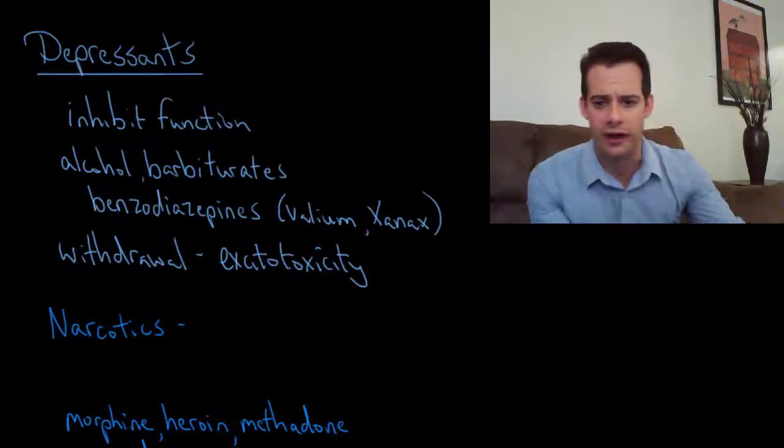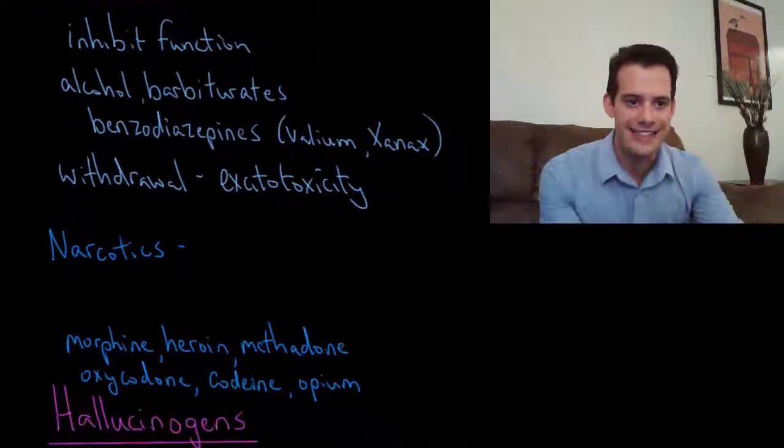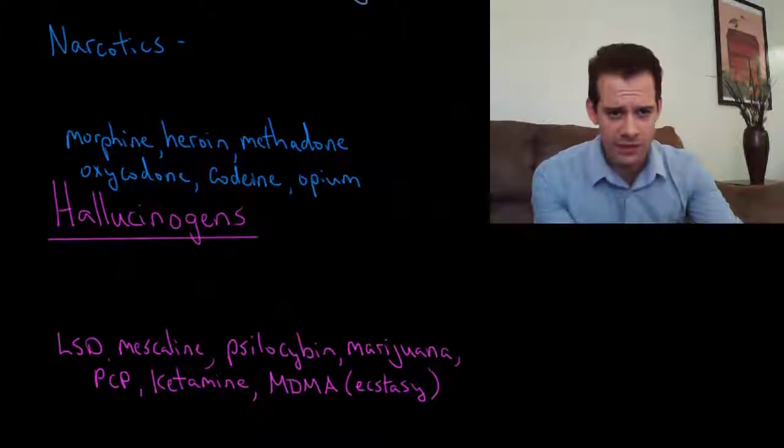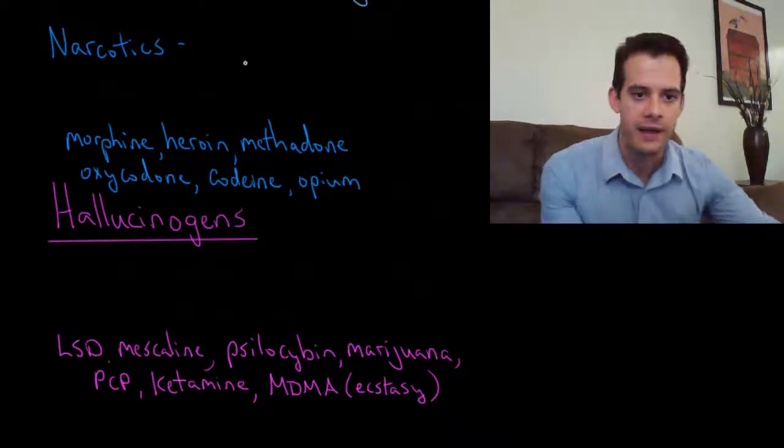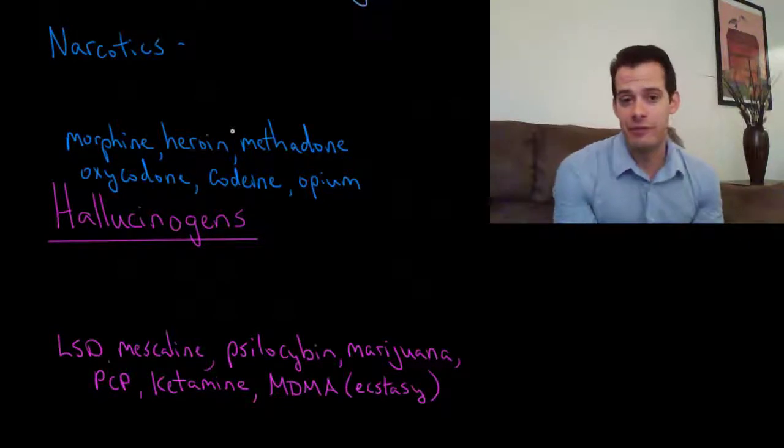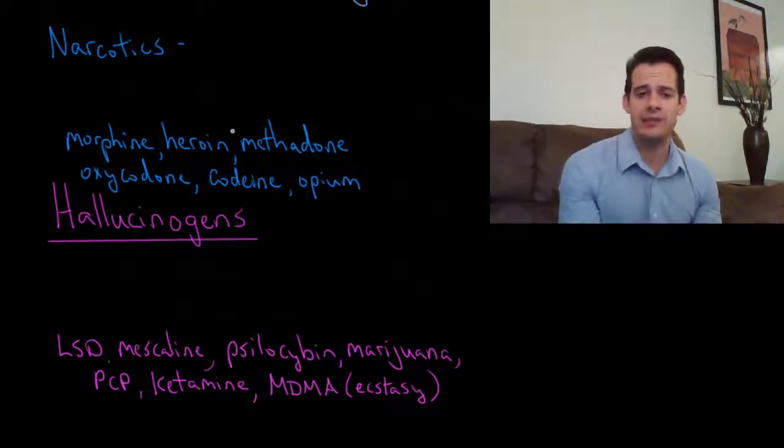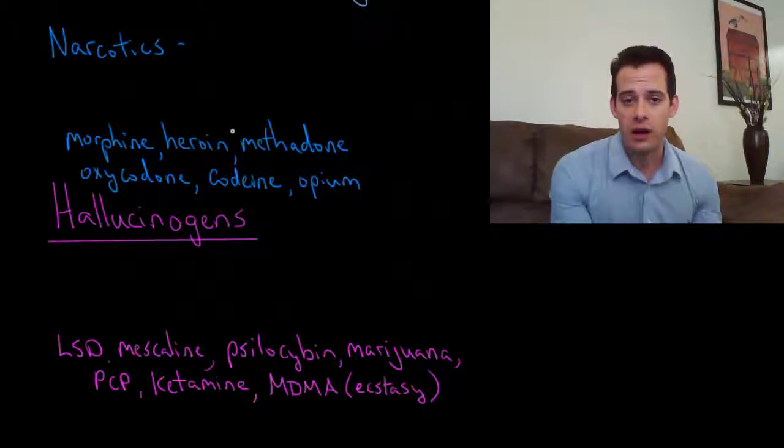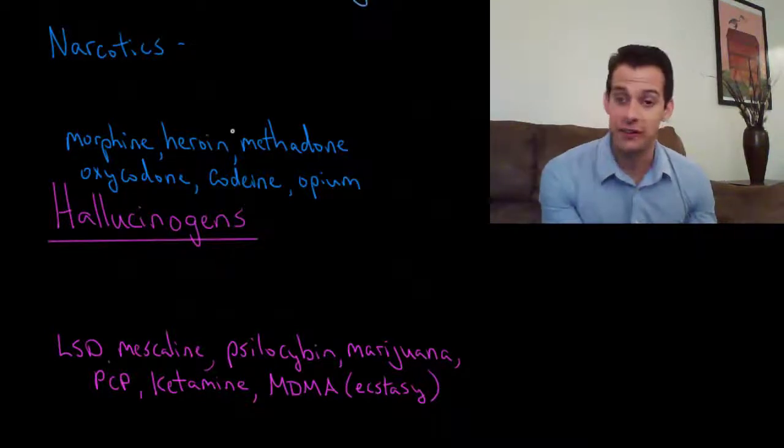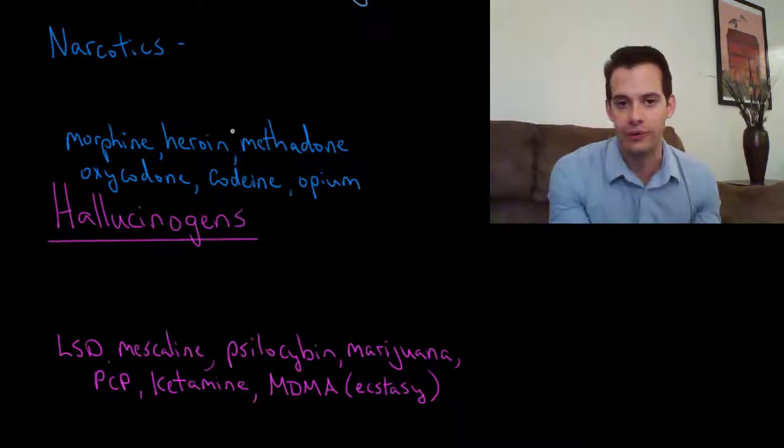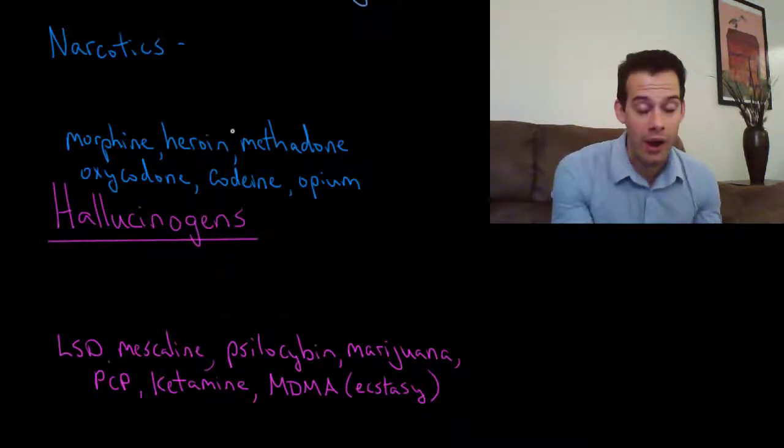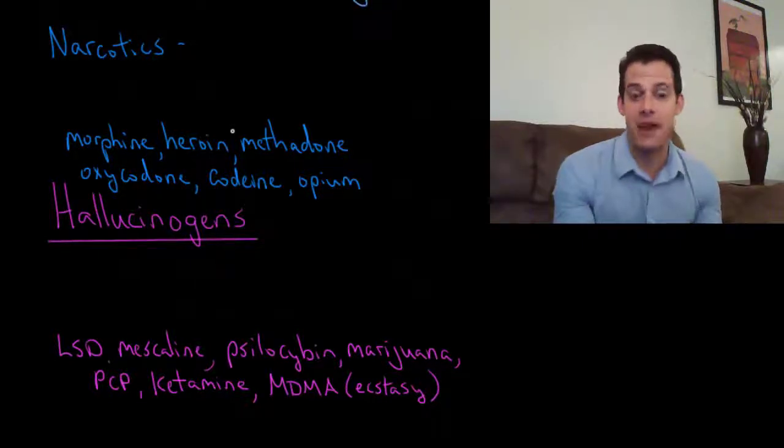Now I want to talk about narcotics. Narcotics are a type of depressant, but there's a little bit of confusion here. That's because the term narcotic has a legal definition that's different from the medical definition. In terms of U.S. law, any drug that's illegal can be referred to as a narcotic. So you can refer to cocaine as a narcotic even though it's a stimulant, and you can refer to marijuana as a narcotic even though it's a hallucinogen.